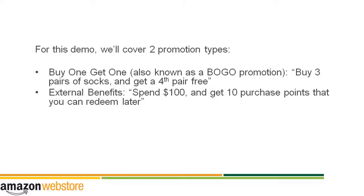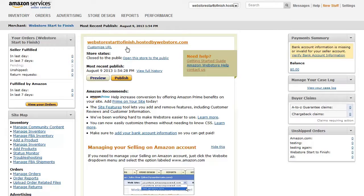In this demo, we'll cover two of the types: buy one, get one — for example, buy three t-shirts and get a fourth t-shirt free — and external benefits. For example, spend $100 and get 10 member loyalty points that you can cash in later.